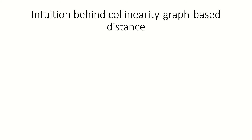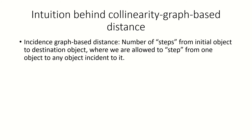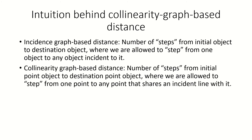If you recall, the notion of distance defined by incidence graphs can be thought of as the number of steps we need to take to a destination object, where with each step we can reach any object that's incident with our current object. In contrast, the notion of collinearity graph-based distance, as we've defined it so far, can intuitively be thought of as the number of steps we need to take to arrive at a destination point object from a starting point object, where with each step we can reach any point object that shares a line with our current point object. These two notions of distance correspond to two different ways of moving through an incident structure.